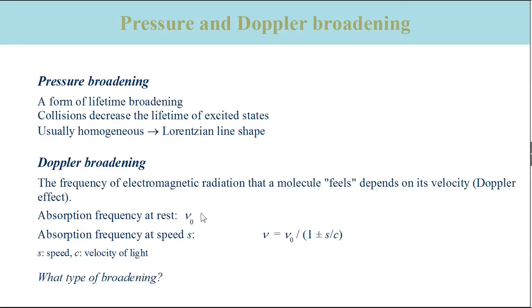If the particle moves towards the source, the frequency of radiation has to be lower. Therefore, the frequency nu at which a given transition is observed depends on the speed of the particle and is given by this equation.